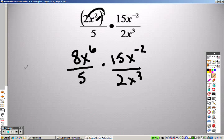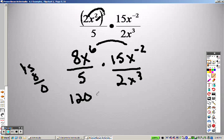8 times 15, we end up getting 120. So I get 120, x to the 6th, and x to the negative 2, I add them to get x to the 4th on the bottom.